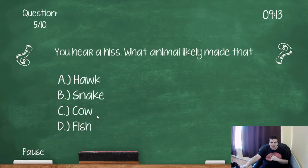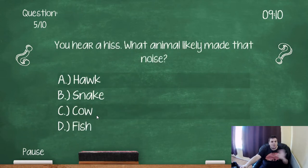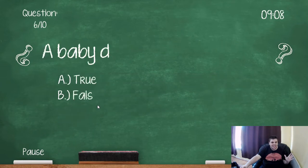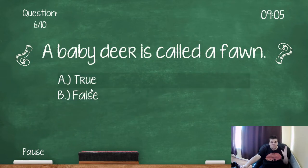You hear a hiss. Oh, I think a hawk. No, I'm joking, it's a snake. A baby deer is called a fawn, that's true.